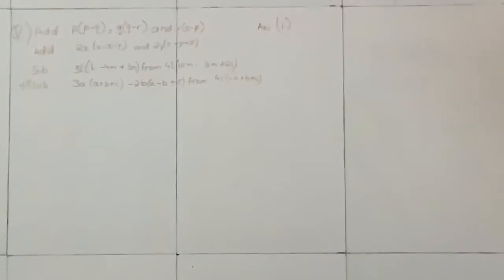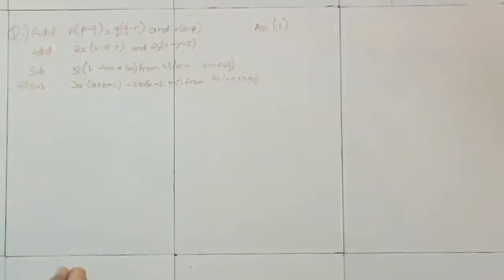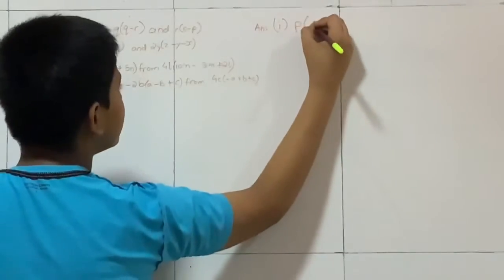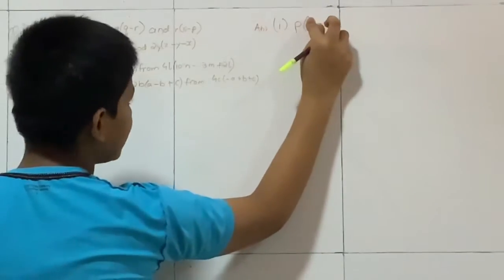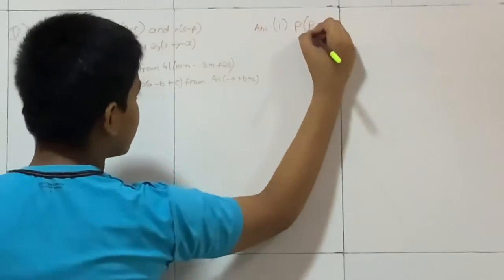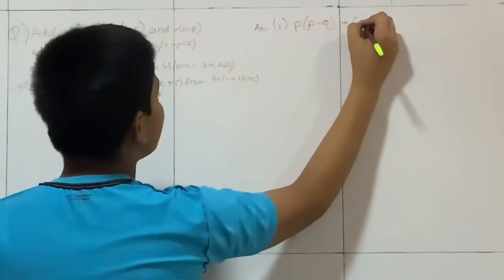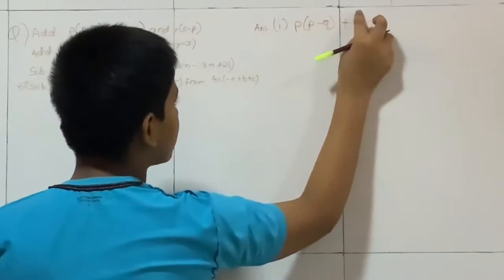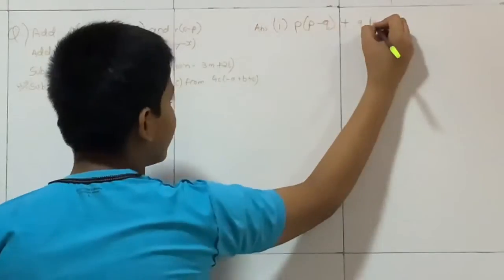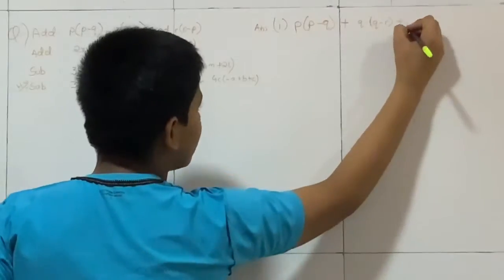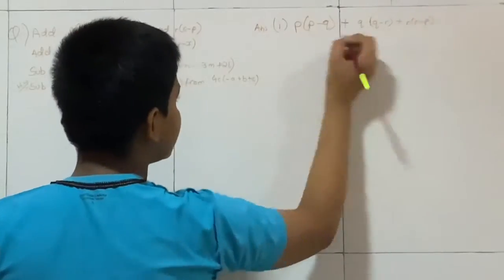I think that we can see this properly. Now let us start. Here, P multiplied by P minus Q. Now here this question is add, so I will put here plus. And Q plus Q multiplied by Q minus R, plus R multiplied by R minus P.